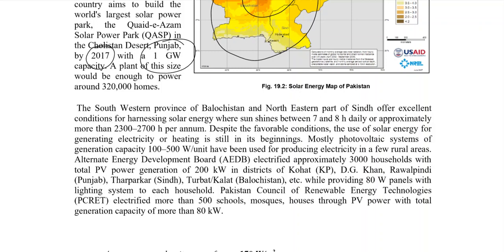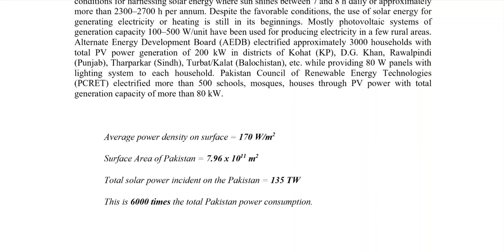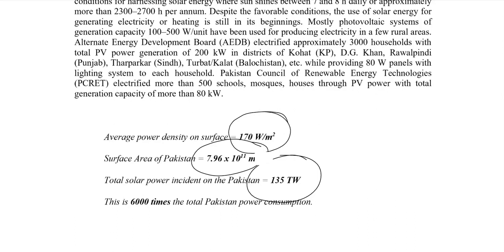Pakistan must invest in solar energy technology. Even using the global average insolation of 170 watts per square meter, and given that the surface area of Pakistan is 7.96 × 10¹¹ square meters, the total solar power incident on Pakistan's surface is 135 terawatts — which is 600 times Pakistan's current total power consumption. Harnessing even a fraction of this could solve Pakistan's electricity problems.